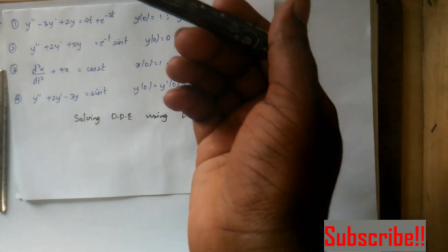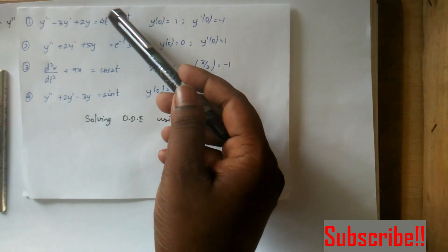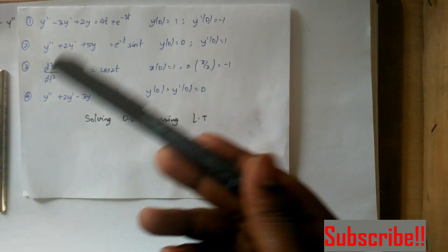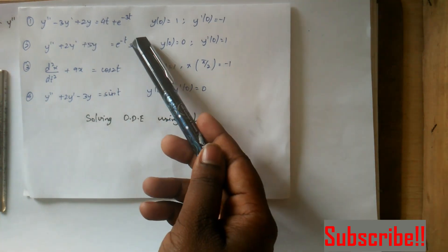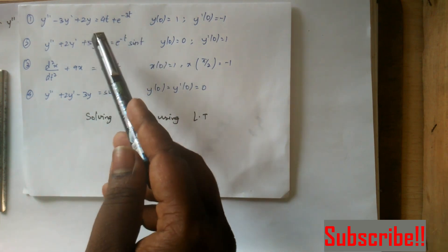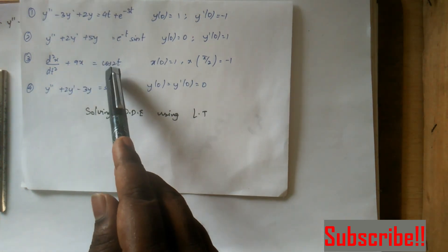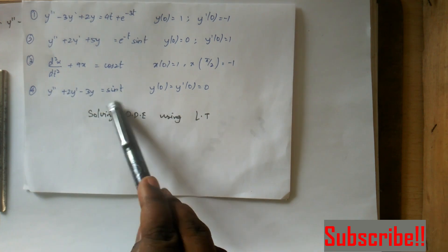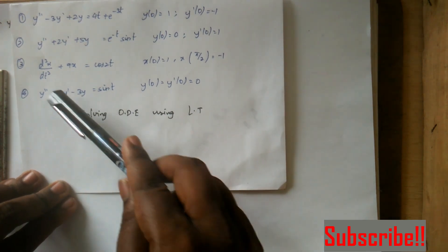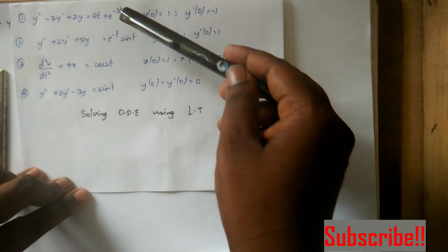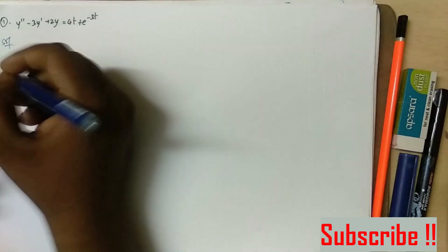First, we have an exponential time and an t-term. Then, we have trigonometric functions. Trigonometric functions plus exponential time. Then, we have an expansion in trigonometric. I will be solving these three terms and you have to try the last one on your own.